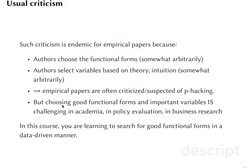In principle, how it is done in practice: you run many different regressions with many different functional forms and then you pick the one that you feel most comfortable with. But this unfortunately leads to p-hacking because you also tend to choose the one that has significant results. Choosing good functional forms and important variables is a challenging problem not only in academia but also in policy evaluation or business research.